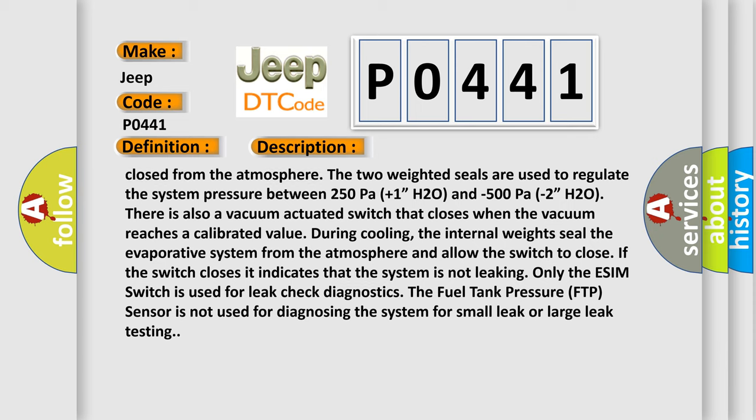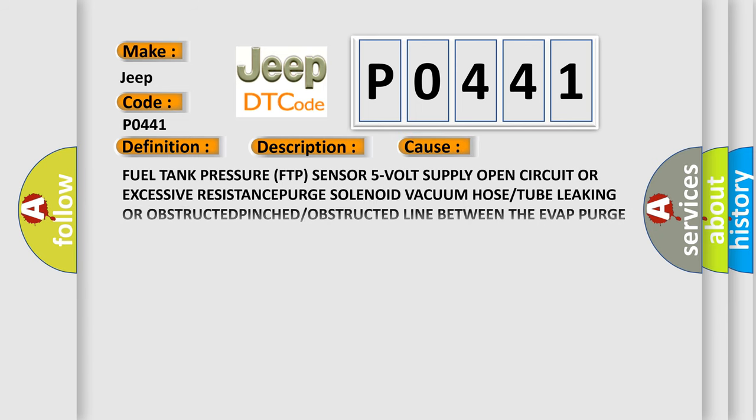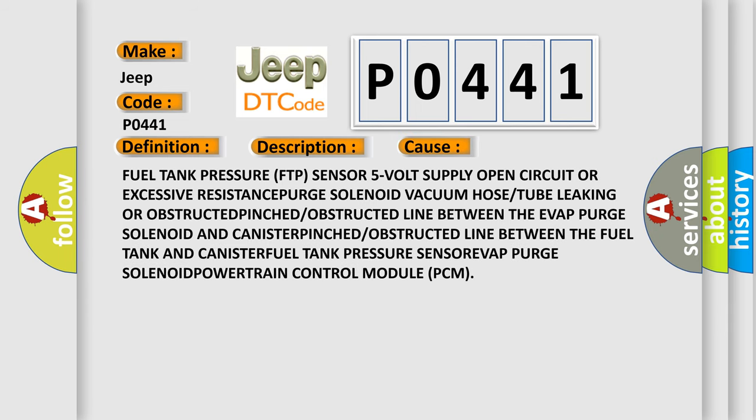This diagnostic error occurs most often in these cases: the fuel tank pressure (FTP) sensor 5-volt supply open circuit or excessive resistance, purge solenoid vacuum hose or tube leaking or obstructed, pinched or obstructed line between the EVAP purge solenoid and canister, pinched or obstructed line between the fuel tank and canister, or powertrain control module (PCM) issues.